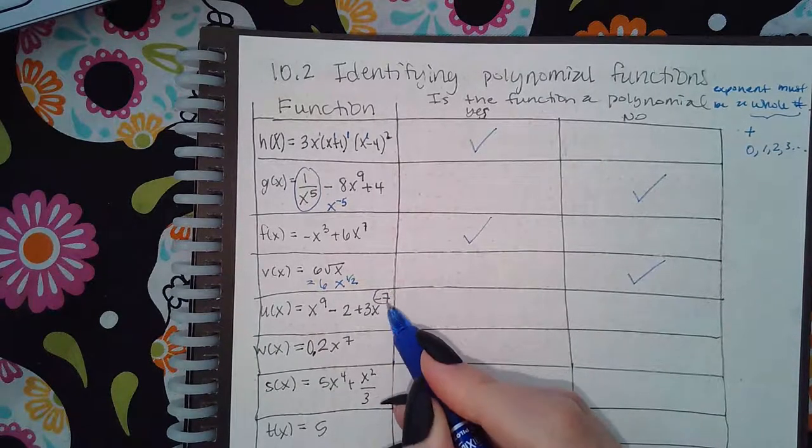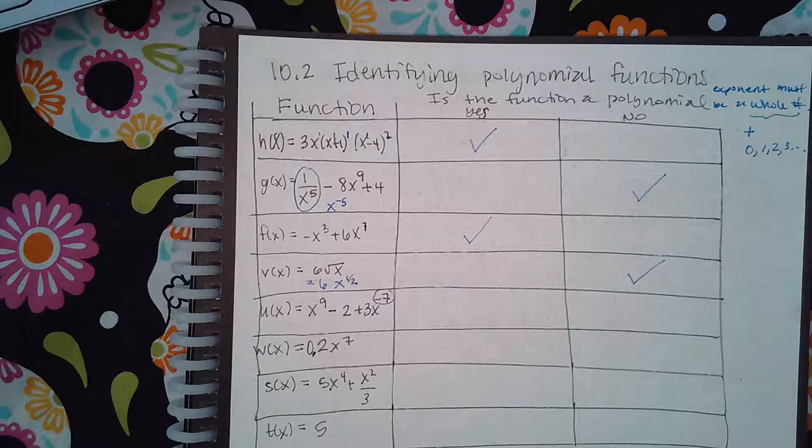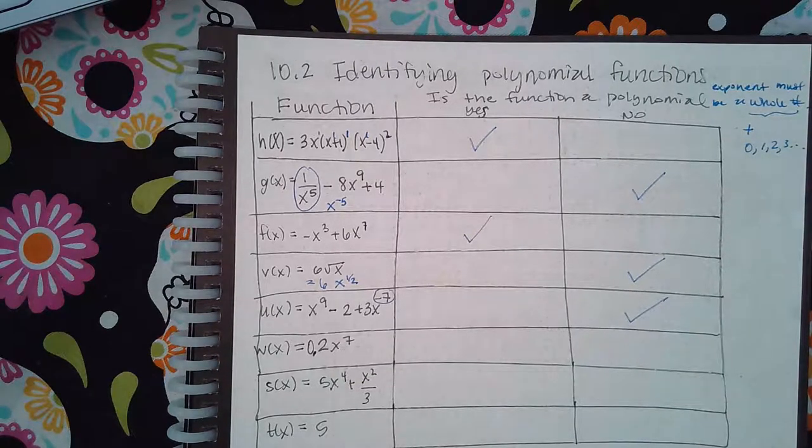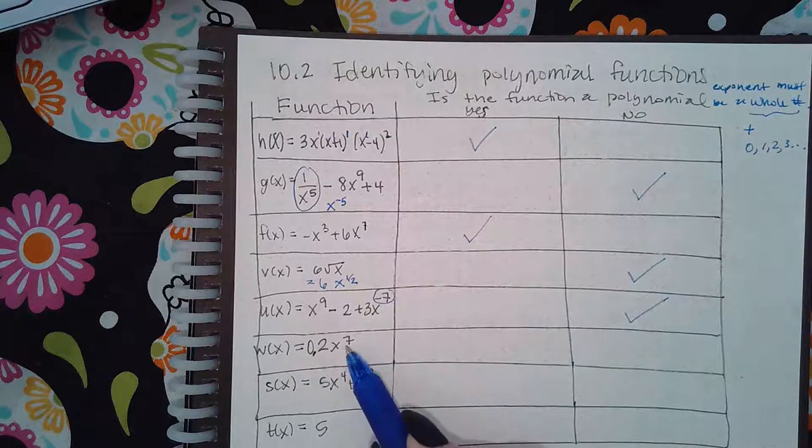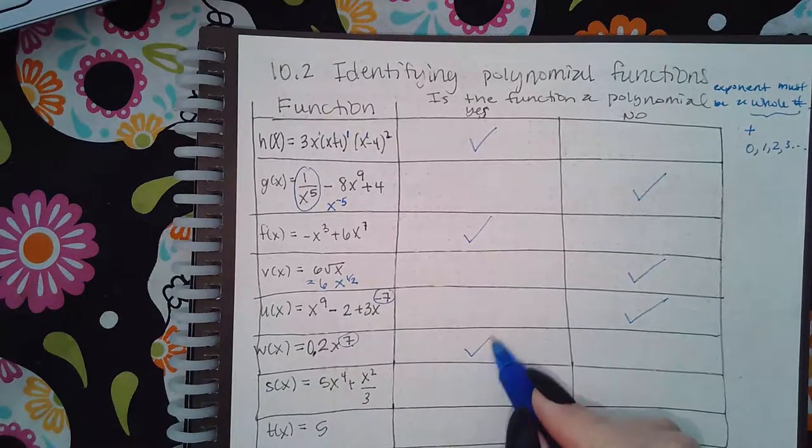Here I have a negative exponent, which is not a whole number. So no, remember has to be positive in order for it to be a whole number. Here I have a seven and that's okay. So that's a function.